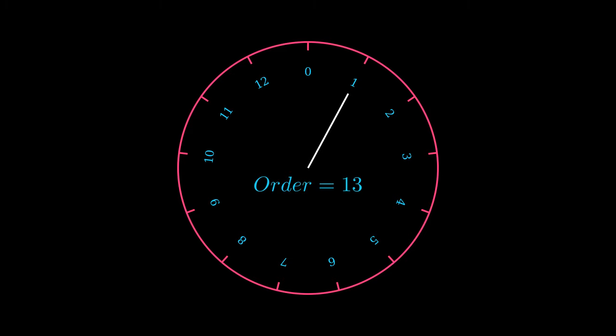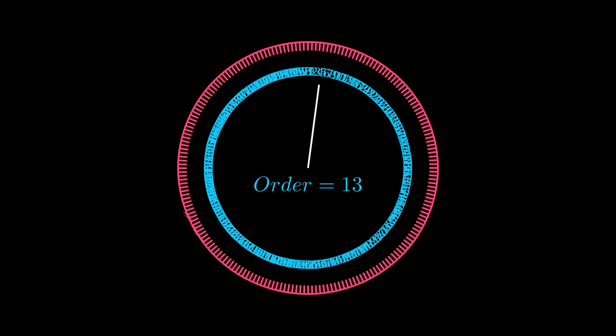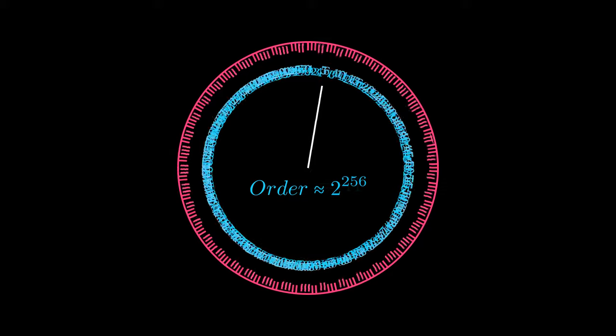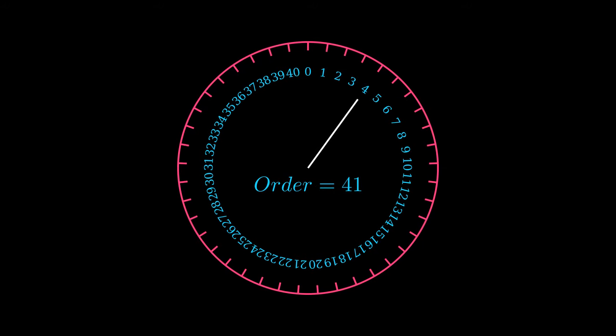So our modified clock is a prime field of order 13. In cryptography, the order is usually very large. Many standards use the order close to 2 to the power of 256. In this video, however, we'll use order of 41 to illustrate our examples. And we'll visualize the prime fields on the line axis instead of a round clock.